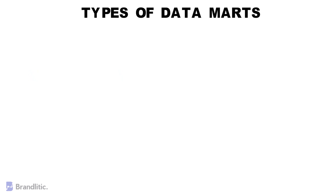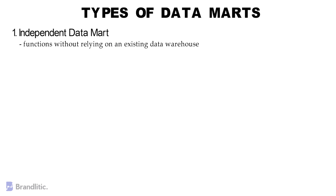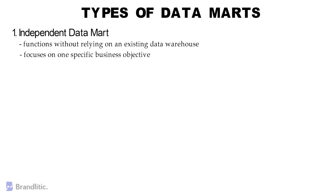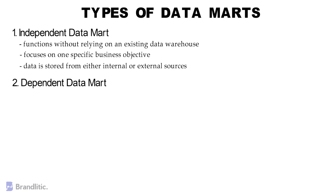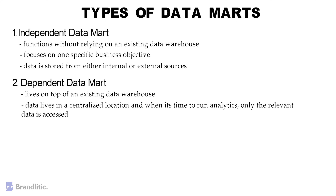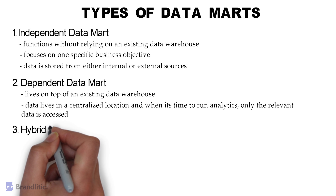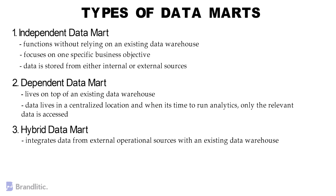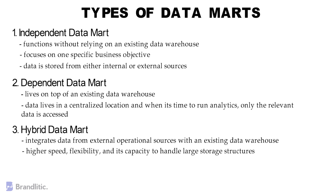There are three different types of data marts. First, an Independent Data Mart — as the name suggests, it functions without relying on an existing data warehouse and typically focuses on one specific business objective. Data is stored from internal or external sources and called upon for data analysis and business intelligence. Second, a Dependent Data Mart — unlike the previous type, it lives on top of an existing data warehouse, where data lives in a centralized location and only the relevant data is accessed during analytics. Third, a Hybrid Data Mart — which integrates data from external operational sources with an existing data warehouse, offering higher speed, flexibility, and capacity to handle large storage structures.